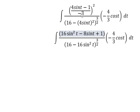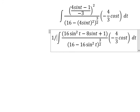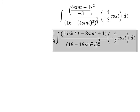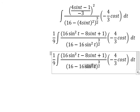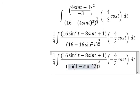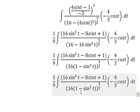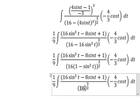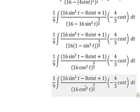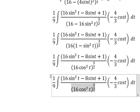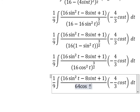We bring in the factor of negative 3 squared, which gives us 1 over 9. So we now have 16 times 1 minus sin²(t), and 1 minus sin²(t) is replaced by cos²(t). This gives us 64 cos³(t).